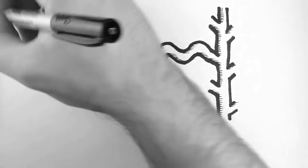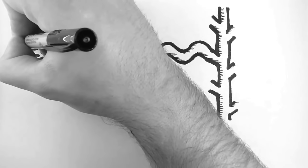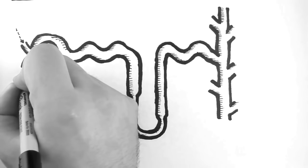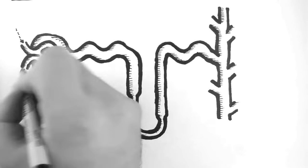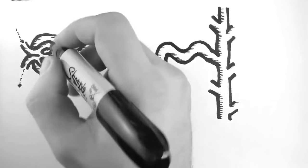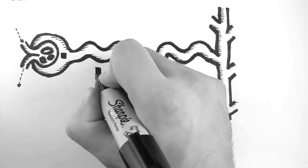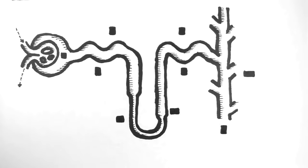So the blood enters the glomerulus through the afferent arteriole here, and exits via the efferent arteriole here. As the blood flows through here, and then onto the vasa recta and the peritubular capillaries, elements of the blood get pulled into and out of this system of tubes.